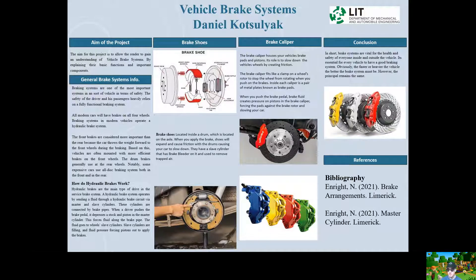There is usually one of two brake systems: drum brakes and disc brakes. Most common cars have disc brakes on the front wheels and drum brakes on the back. More expensive cars will have disc brakes on all four wheels.